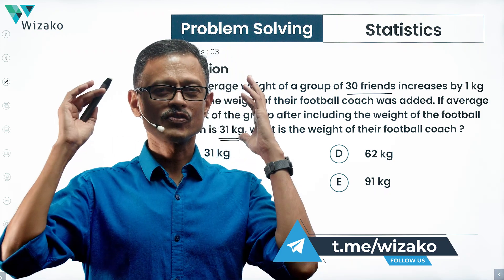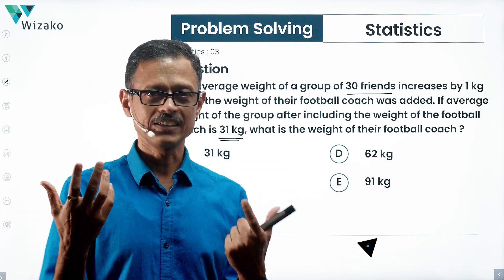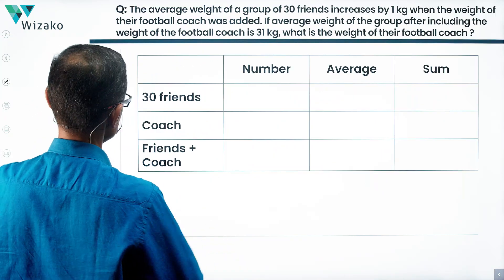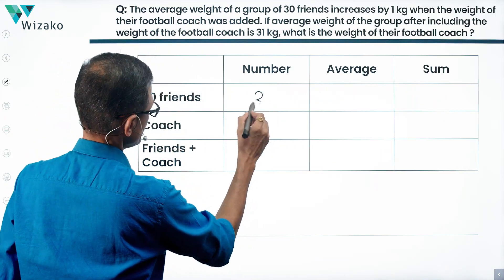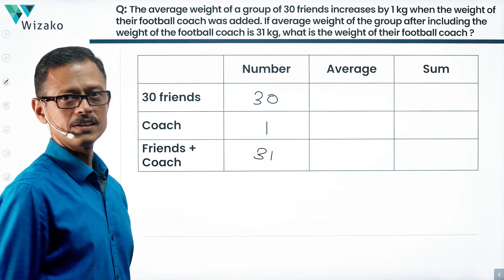This is a question which is framed to use the standard framework of averages. Let's get started. There are 30 friends, so write the number 30, one coach all together is going to be 31.